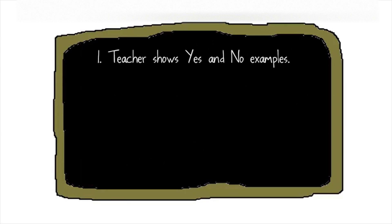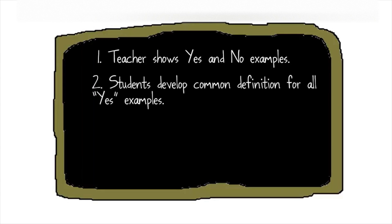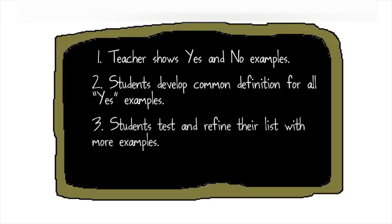Here's how it works. First, the teacher shows a series of examples — we call these yes and no examples. The yes examples embody all of the qualities of the idea you are trying to show them, and the no examples might have some, but not all of those qualities. As they watch these examples, students develop a common definition for all of the yes examples. Then the students test and refine their list by looking at more examples.